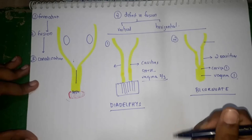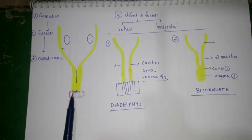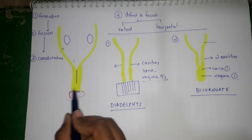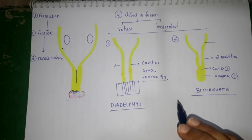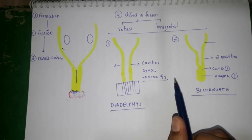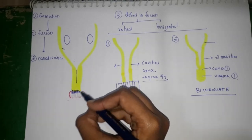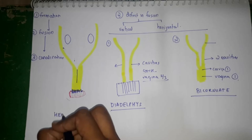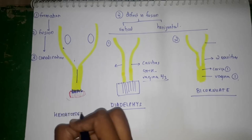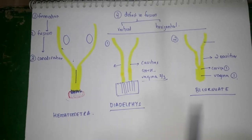The last fusion defect involves the vertical component: the paramesonephric duct has formed properly and midline fusion is adequate, but fusion with the urogenital sinus fails, forming an atresia. In this case, the patient will have developed secondary sexual characteristics and will have no fertility issue structurally, but will present with primary amenorrhea. However, this is not true amenorrhea — because menstruation is occurring but cannot exit, it leads to hematometra. The patient will have cyclical abdominal pain and cyclical suprapubic swelling.